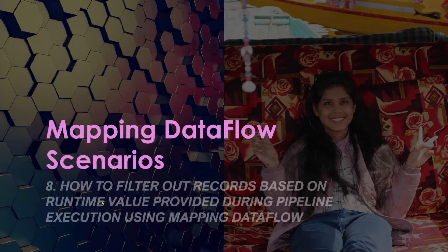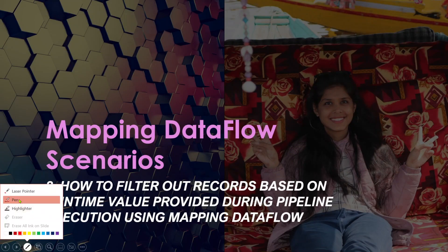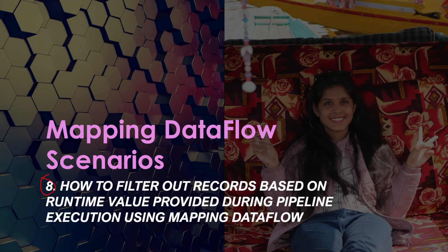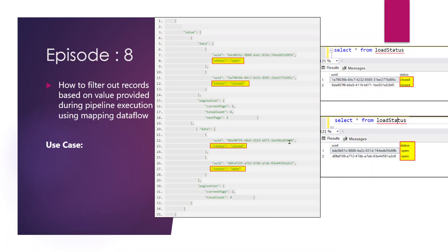Hi guys, welcome to Azure Content. This is part 8 in the Mapping Dataflow Scenarios playlist. In this video, we are going to learn how to filter out records based on a runtime value provided during pipeline execution using Mapping Dataflow. Our requirement is to filter out records based on some condition, and we have to provide the value for that condition during the runtime of the ADF pipeline.